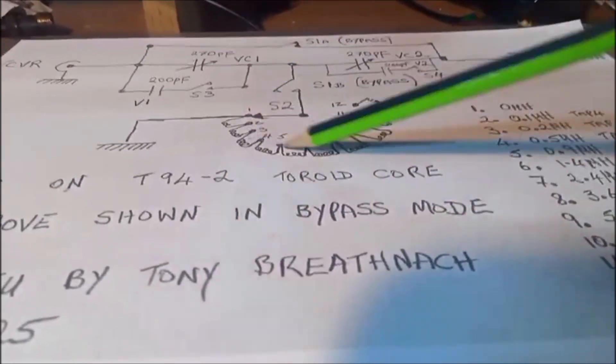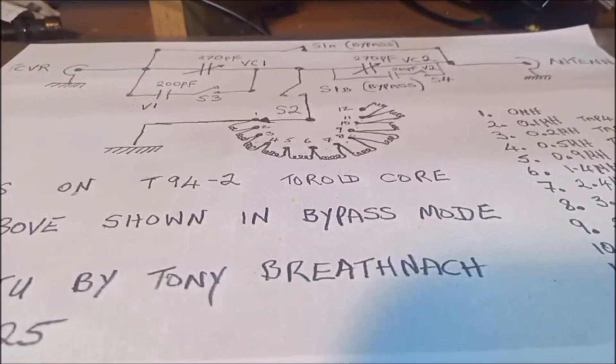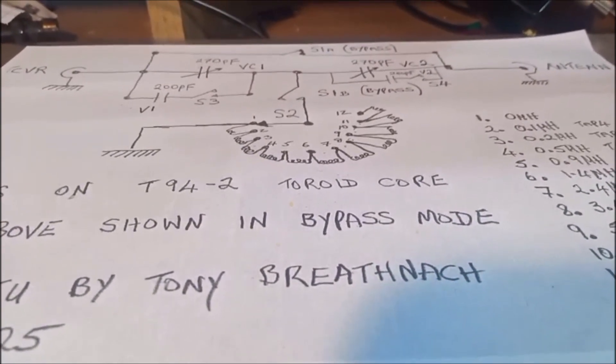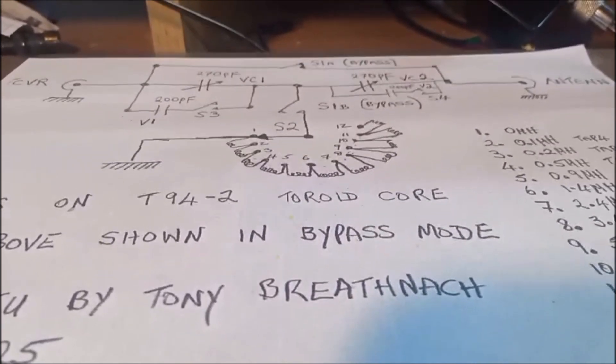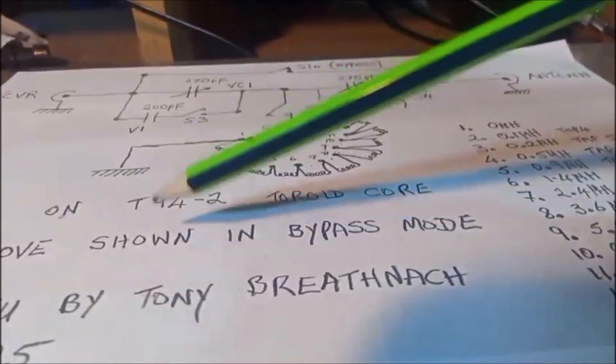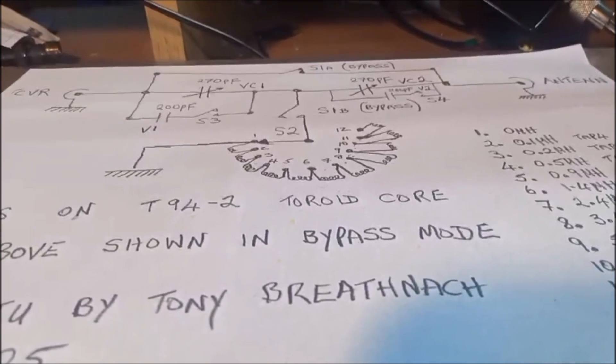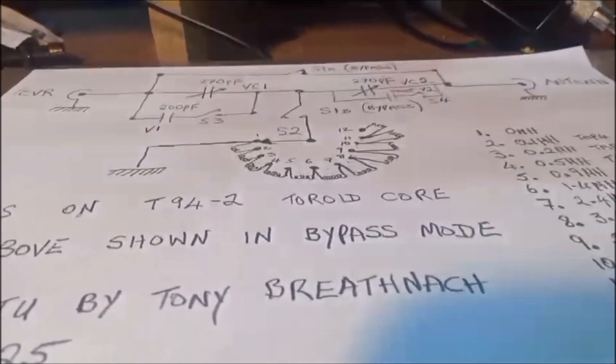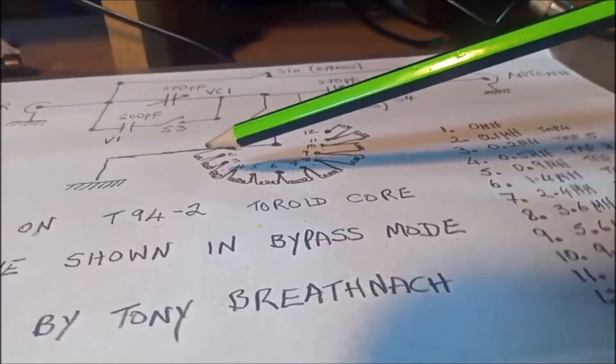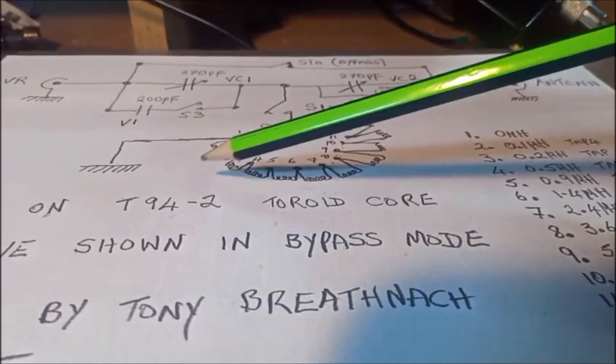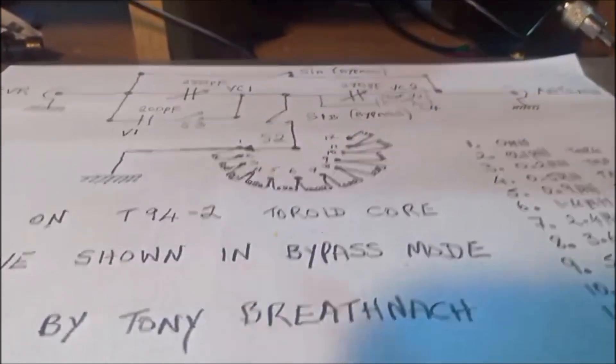The rotary switch here will select the appropriate inductance. The inductance or the coil was wound on a T-94-2 toroid core and I had it tapped at the various, there's 12 actually different inductances available and they're selected by this rotary switch here.